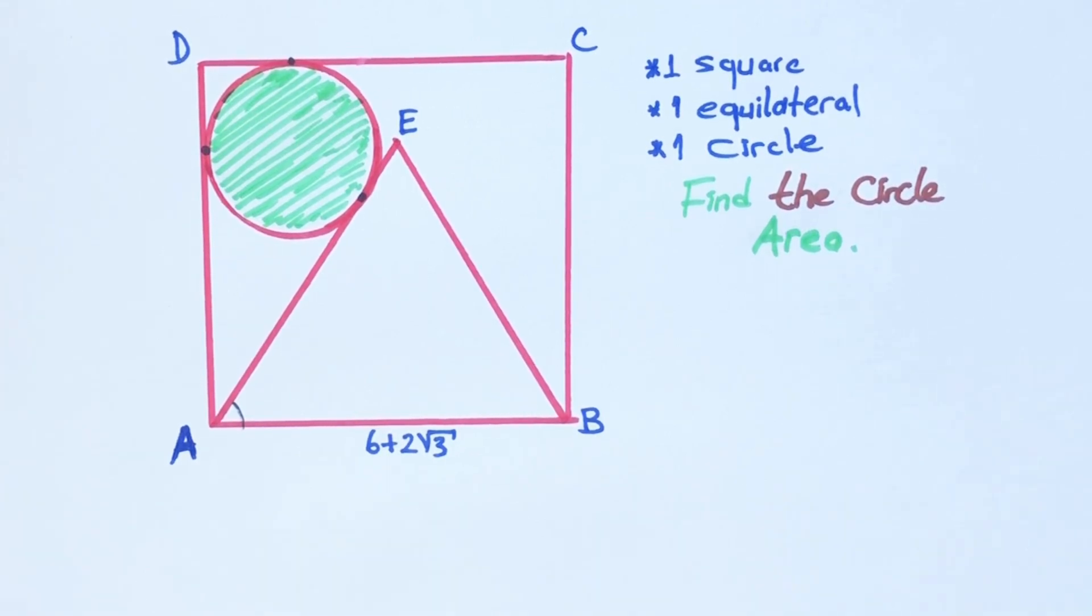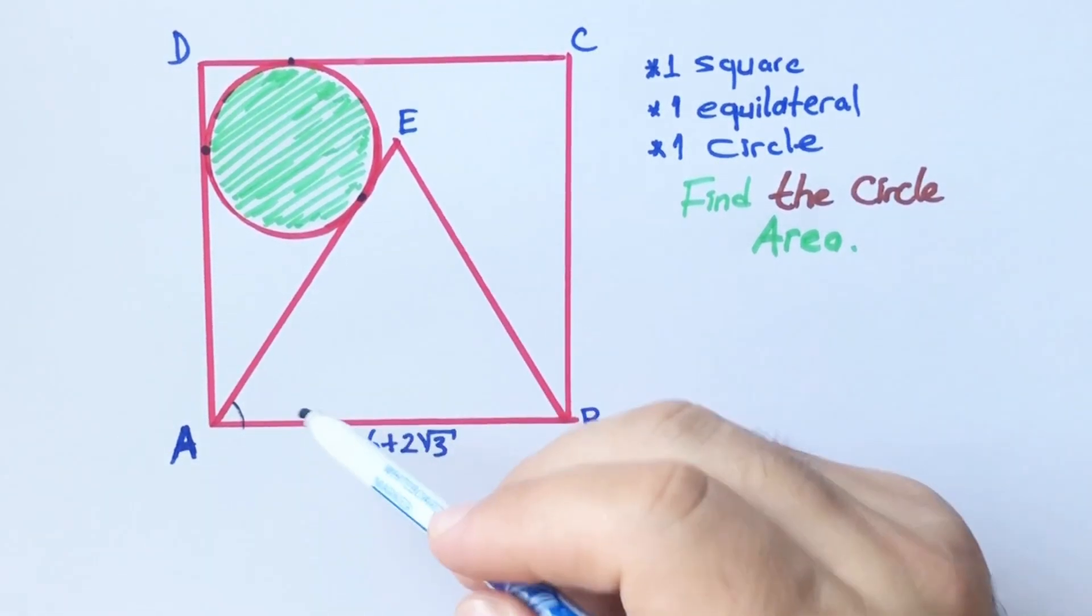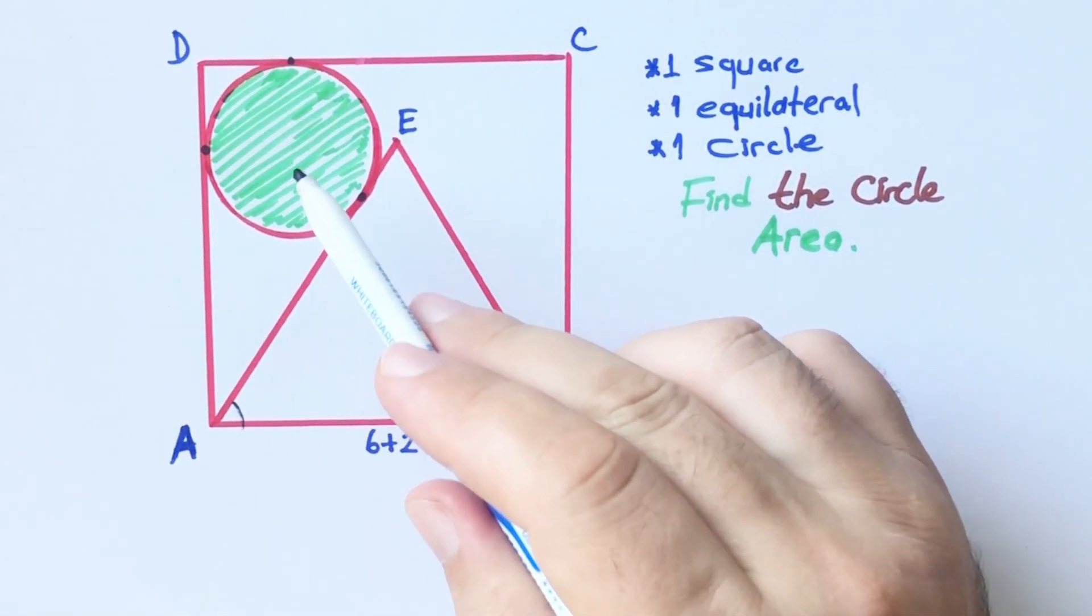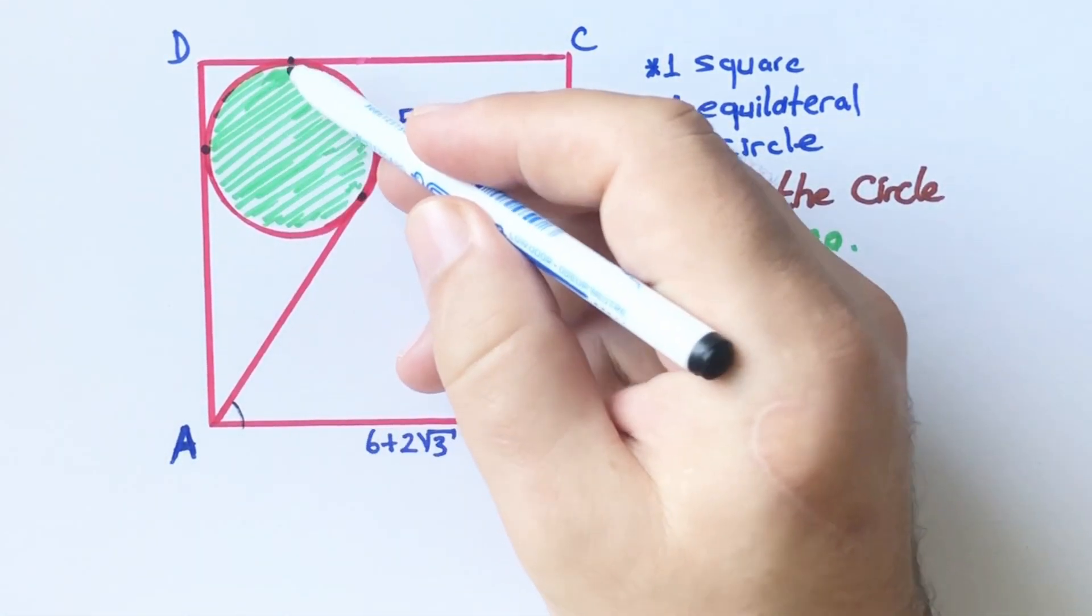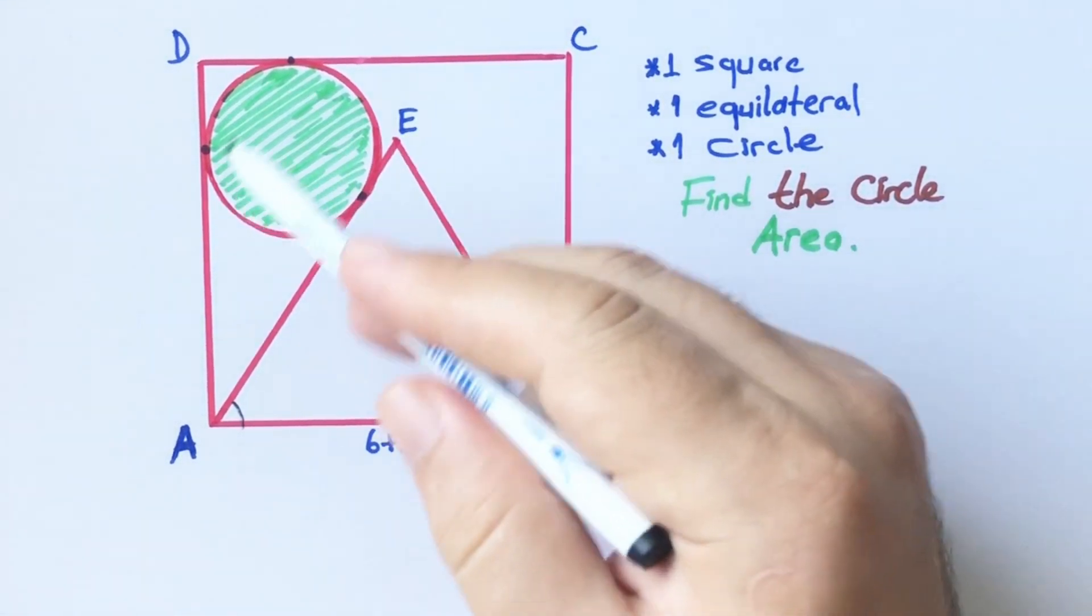Hello everyone, in this video we have one square, one equilateral triangle, one circle, and these are tangent points. The circle area is asked.